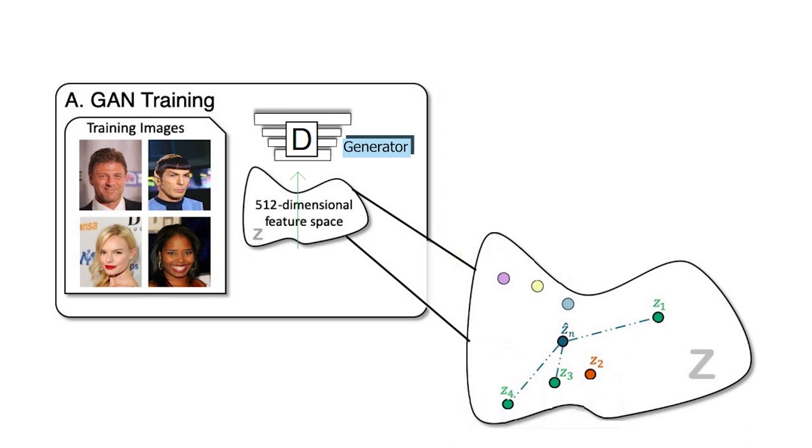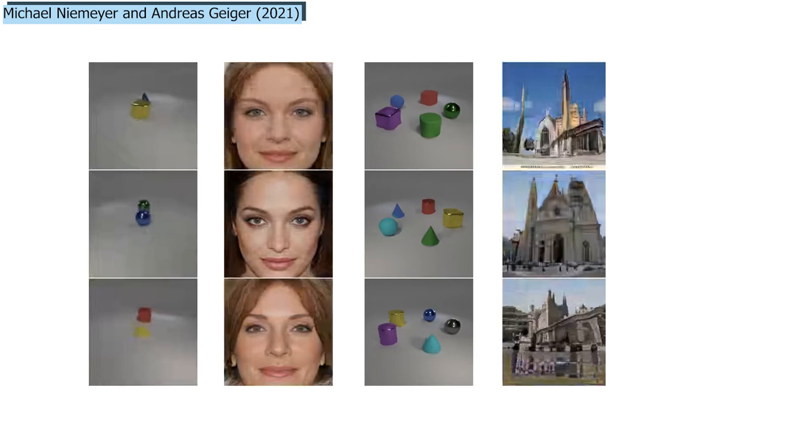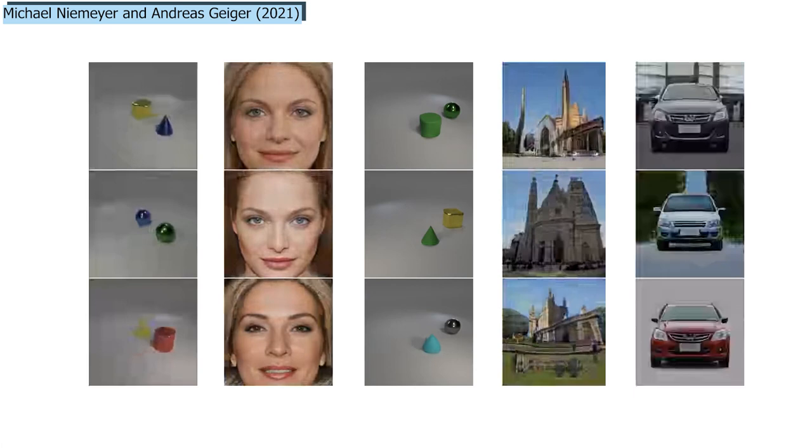Indeed, by taking latent codes of the shape and appearance of objects and sending it to the decoder, or generator, they are able to control the pose of the objects, which means they can move them around, change their appearances, add other objects, change the background, and even change the camera pose. All these transformations can be done independently on each object or background without affecting anything else in the image.